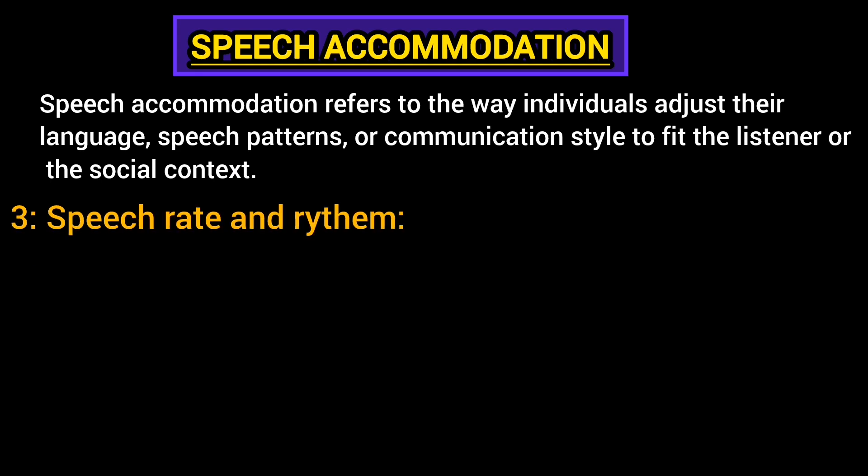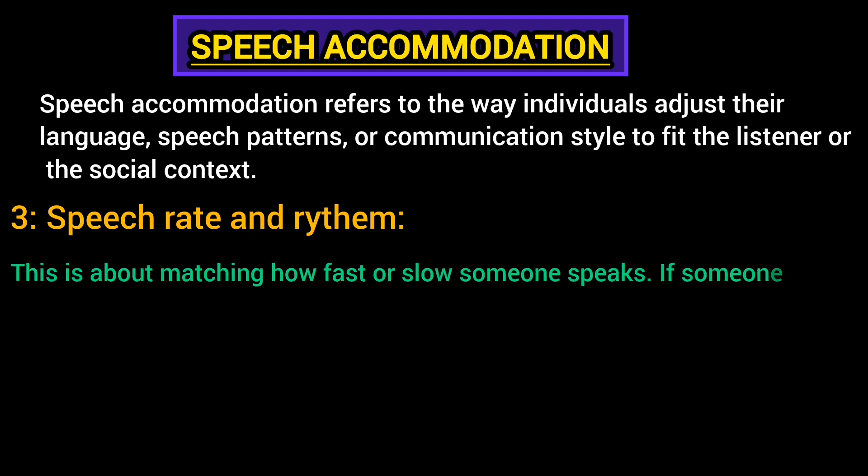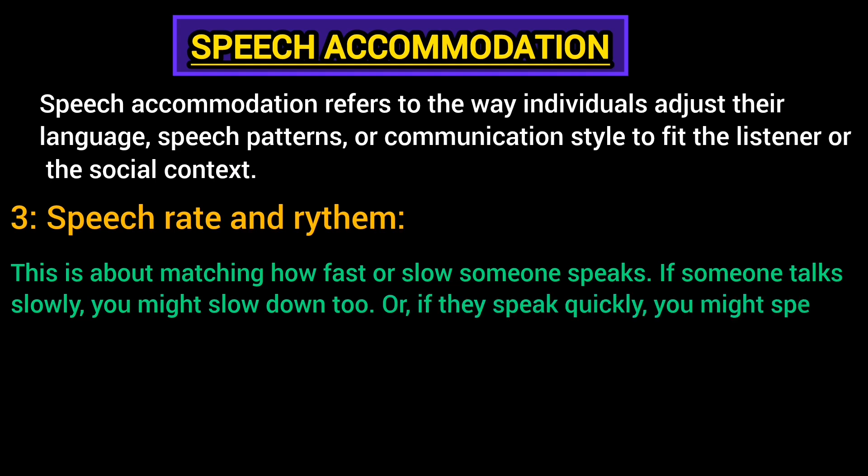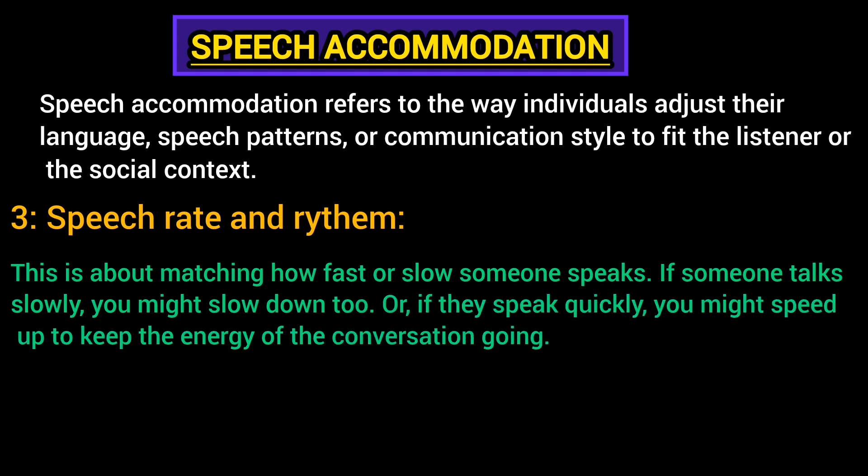Speech rate and rhythm is another characteristic included in speech accommodation. This is about matching how fast or slow someone speaks. If someone talks slowly, you might slow down too, or if they speak quickly, you might speed up to keep the energy of the conversation going. Intentionally or unintentionally, we make our speech fast or slow according to our listener.